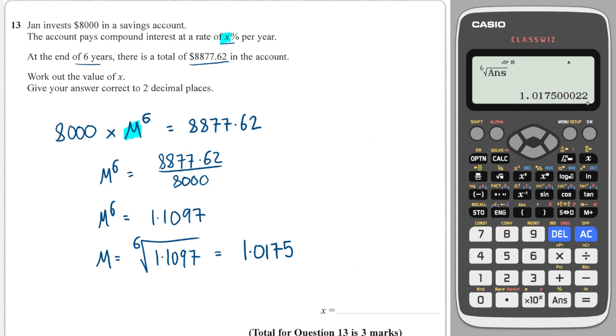That's the multiplier, so what's the actual percentage? Well, that's going to be 1.75%, and that is the x value we're looking for—not the multiplier, but the percentage they get per year.